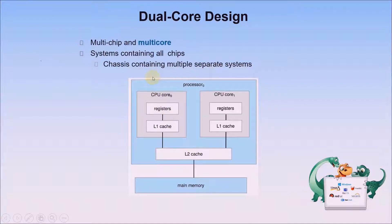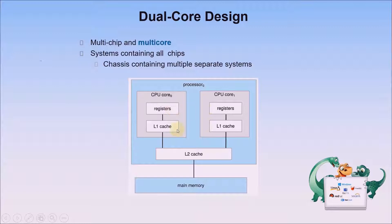For the dual-core design — multi-chip and multi-core — one physical processor is virtually divided into multiple cores. In this dual-core example, CPU core zero has its own registers and cache, and so does core one, but they share an L2 cache leading to main memory.